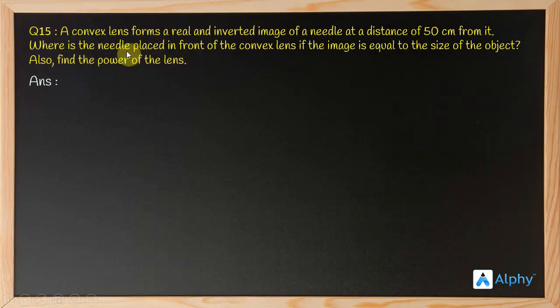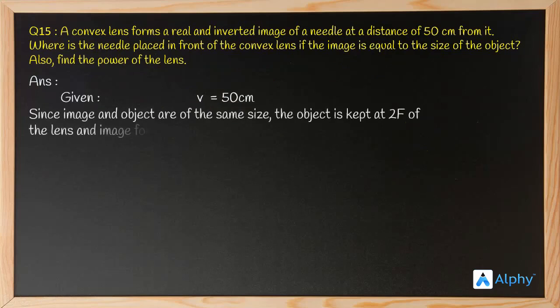So we can mentally find out that the object is at a distance of 50 centimeters. But let's list down the things given. It's given that v = 50 centimeters. And since image and object are of the same size, the object is kept at 2F of the lens and image forms at 2F on the other side.